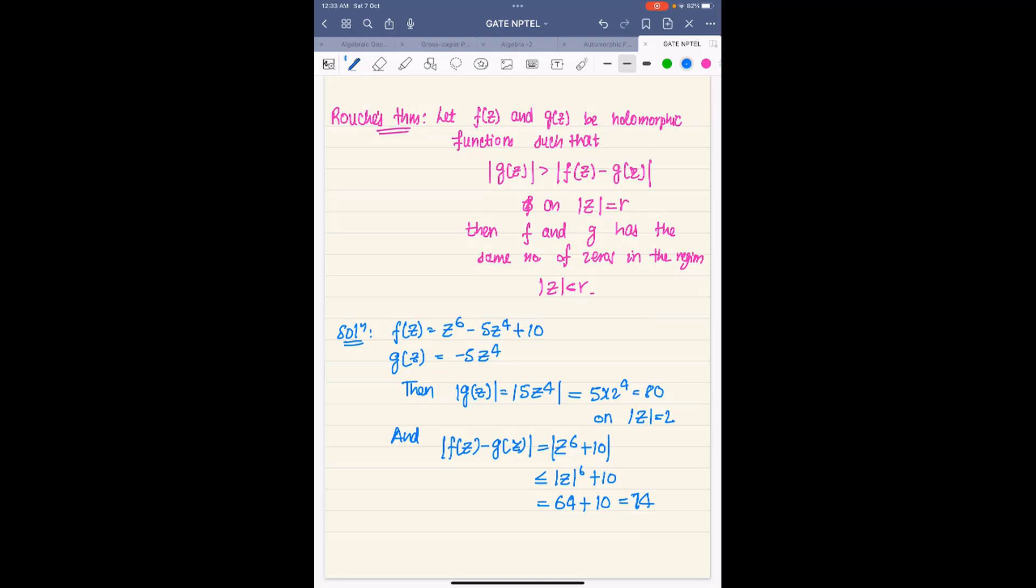So we see that |g(z)| on |z| equals 2 is strictly greater than |f(z) minus g(z)| on |z| equals 2.